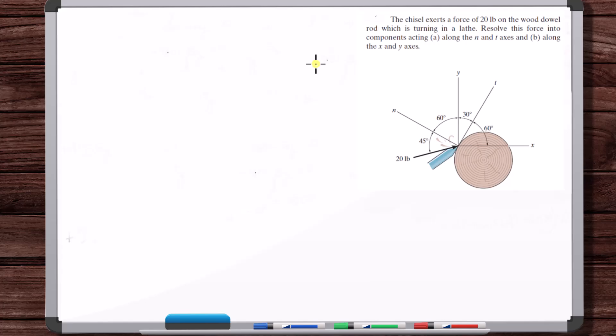In this video, we're going to work a problem where we find the components of a force along random directions. We're going to do this graphically.